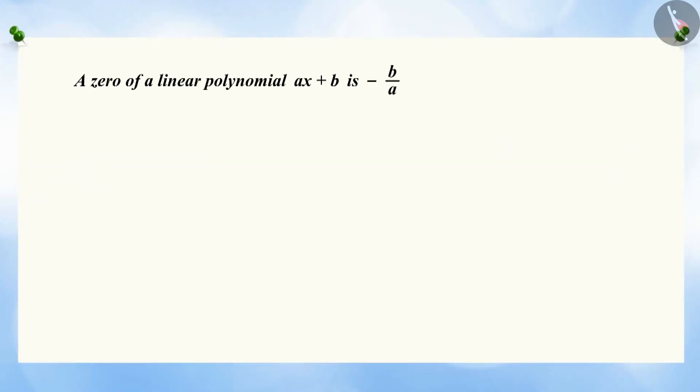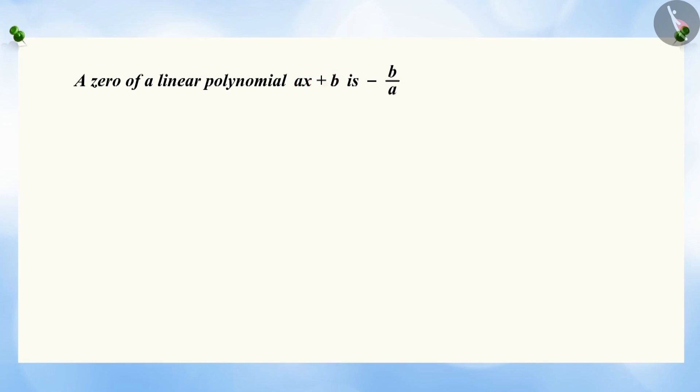In your previous class, you have learned that a zero of the linear polynomial AX plus B is negative B by A.